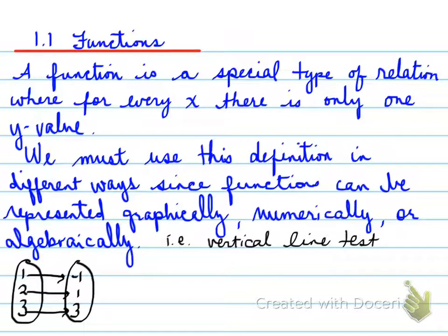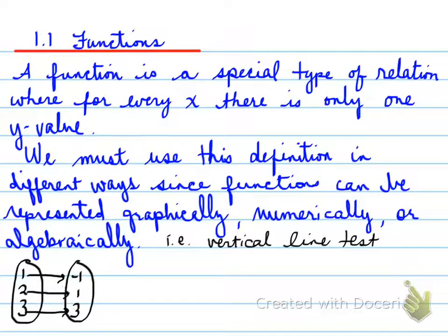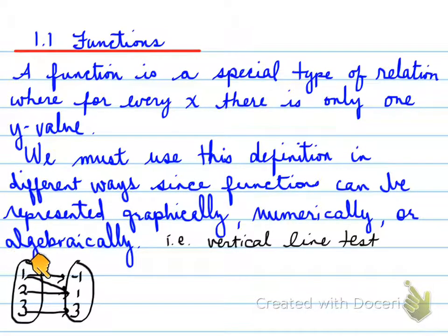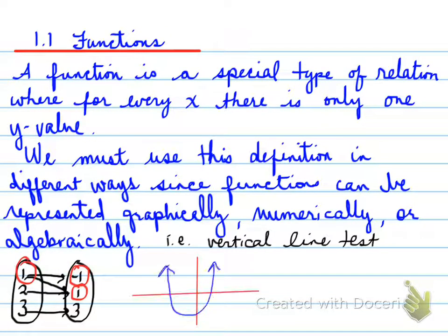Because when you look at it, for every x along here, it only maps to one y, and therefore it is a function. When it's not a function is when you have, for example, one x going to two y's — you cannot have this, and therefore that makes it not a function.